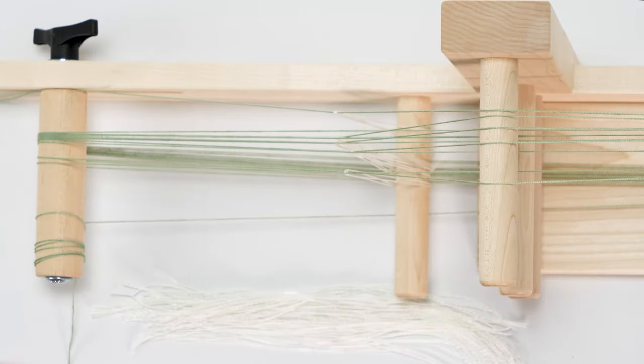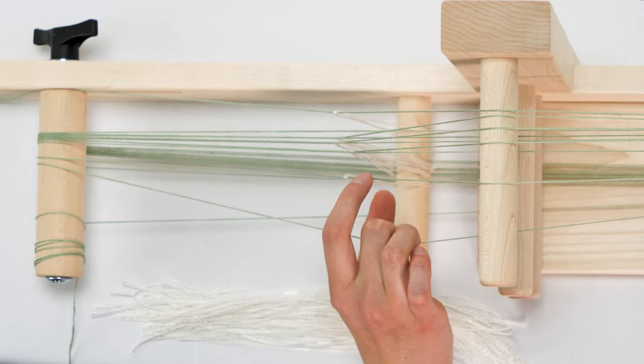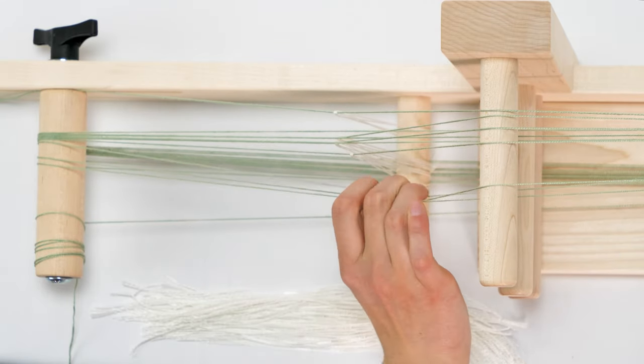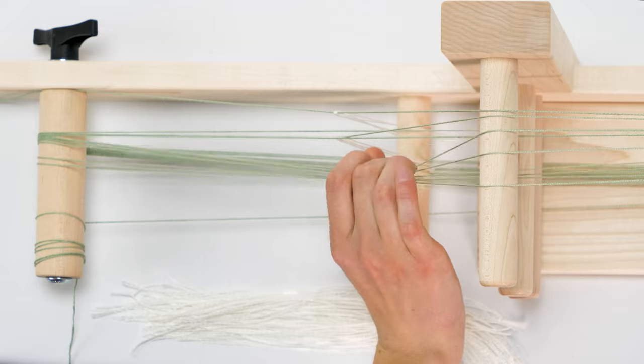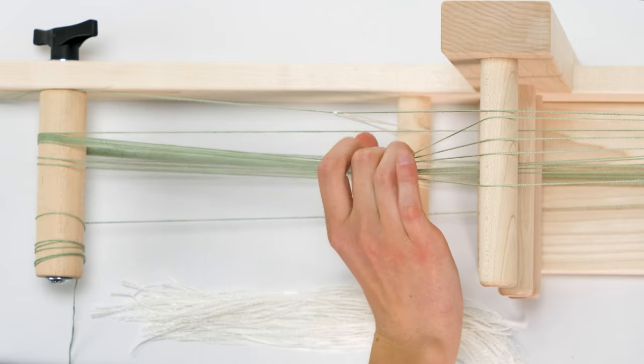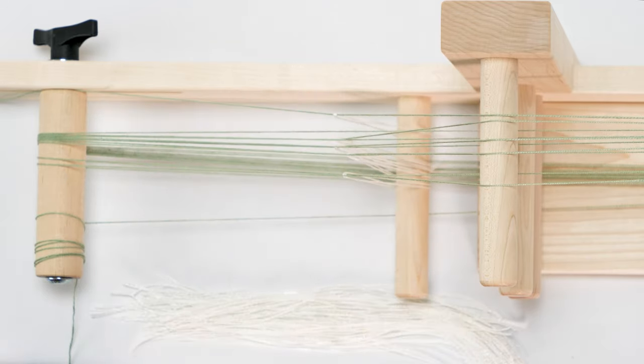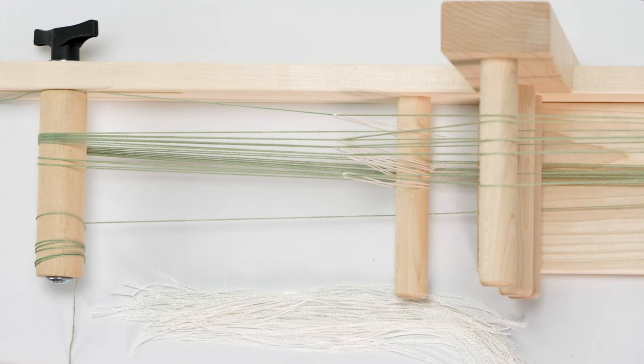After I have finished a section, I always like to go back and make sure that I wound my threads correctly. We want to make sure that the threads go open, heddled, open, heddled, open, heddled, open, and so on. If there is a mistake, I will unwind my warp until I reach the place where the mistake was made and wind it again correctly.